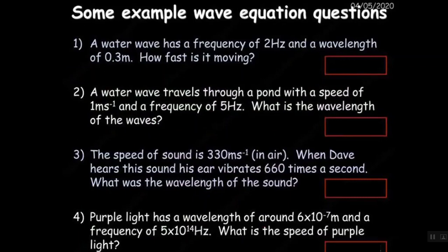If we use that formula and we quickly look at a few questions: A water wave has a frequency of 2 Hertz and a wavelength of 0.3 meters, how fast is it? So we want the speed, so it's f times wavelength, 2 times 0.3 and that gives me 0.6 meters per second.